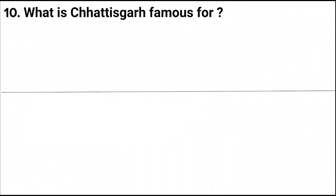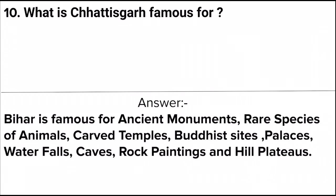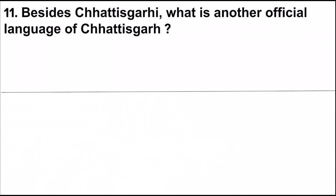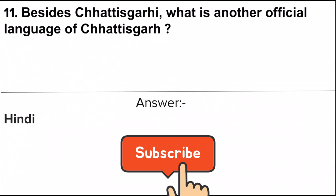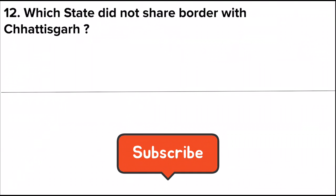Next question: What is the state animal of Chhattisgarh? Next question: What is Chhattisgarh famous for? Chhattisgarh is famous for ancient monuments, rare species of animals, carved temples, Buddhist sites, palaces, waterfalls, caves, rock paintings, and hill plateaus. Next question: Besides Chhattisgarhi, what is another official language of Chhattisgarh? Answer: Hindi.